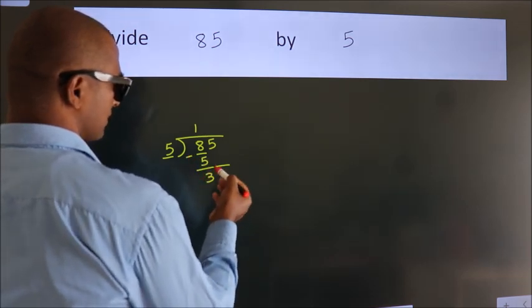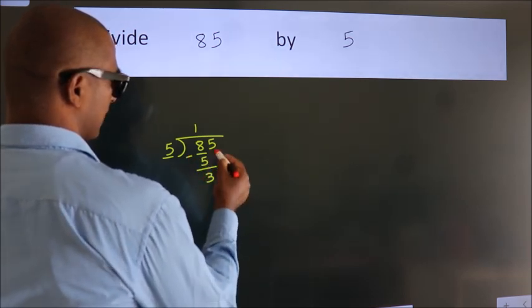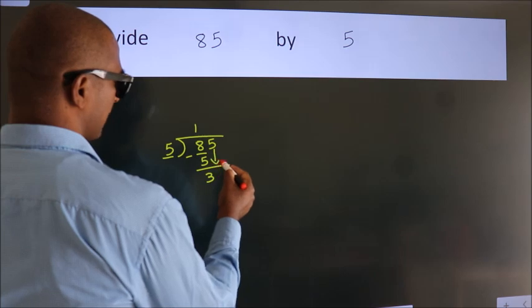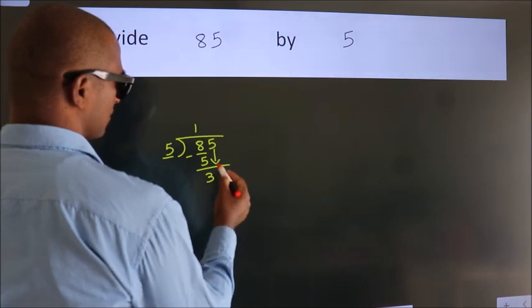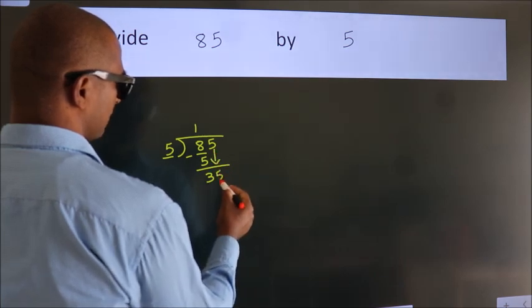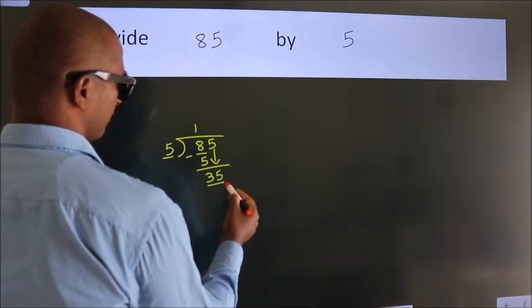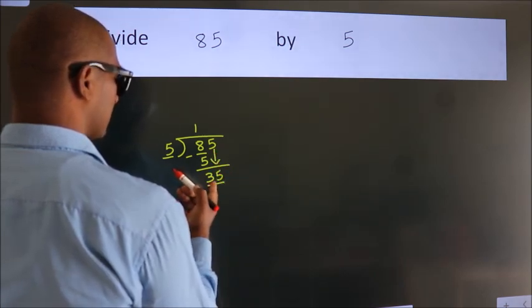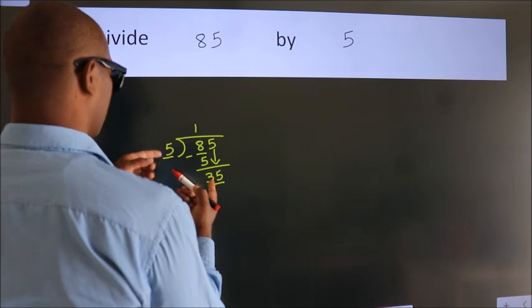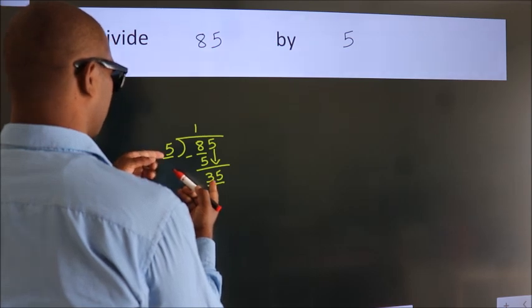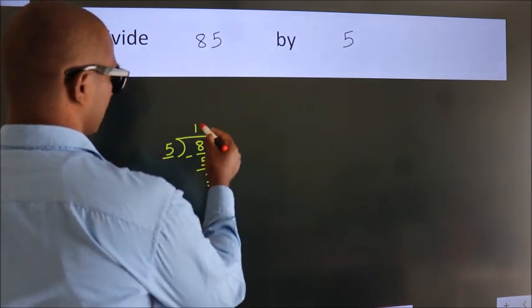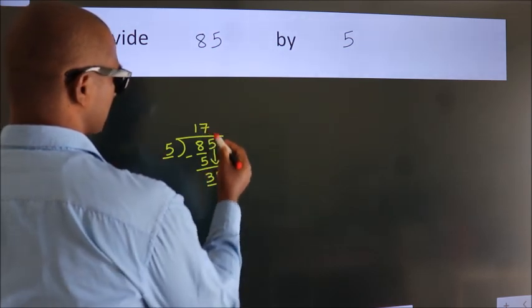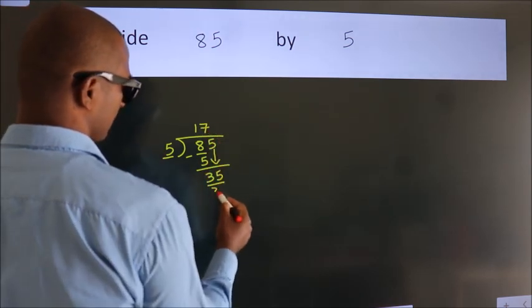After this, bring down the beside number. So, bring down 5, giving us 35. When do we get 35 in the 5 times table? 5 sevens are 35.